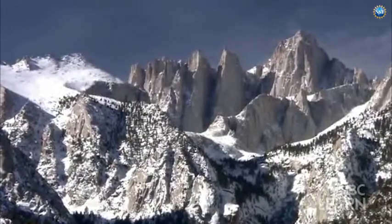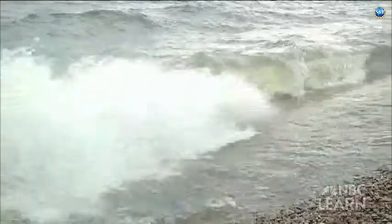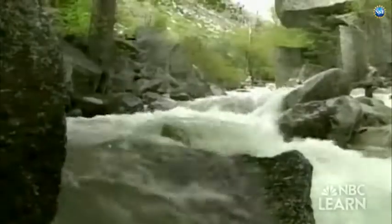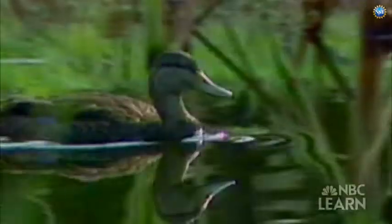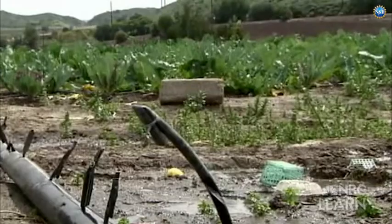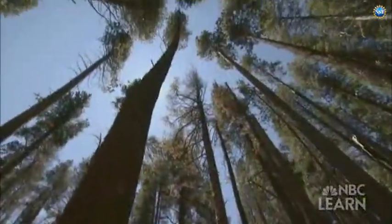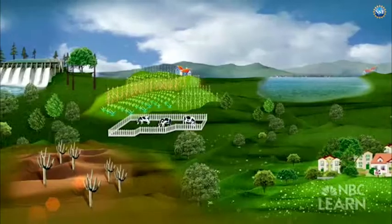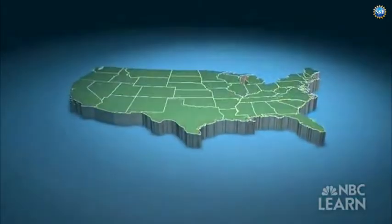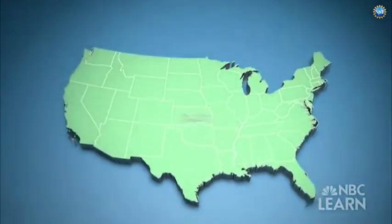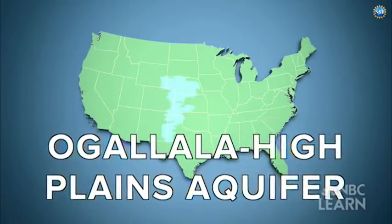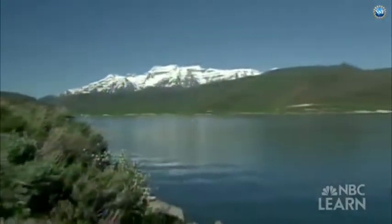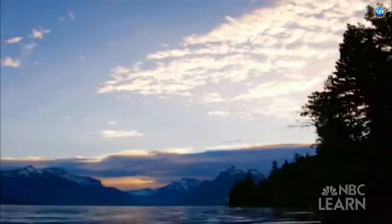In the snow packs atop mountains like the Sierra Nevada, in the Great Lakes, in rivers and streams, in reservoirs and watersheds, in wetlands, in the soil, in and on plants and trees rooted in the soil, and beneath the soil — in water tables and underground aquifers like the Ogallala High Plains, which runs underneath parts of eight states from South Dakota to Texas. All this storage is temporary. Water in all its forms is always in flux and always moving.